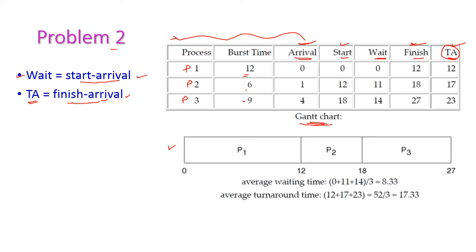We have to draw the Gantt chart to fill the values of starting time and finishing time. Which is the first process? P1 is the first process and burst time of P1 is 12. So the first 12 milliseconds P1 will occupy. After that P2 will start execution; arrival time of P2 is 1, which is less than 12, so no problem. Burst time of P2 is 6, so 12 plus 6 equals 18. Next P3 will start execution with burst time 9; 18 plus 9 which equals 27.